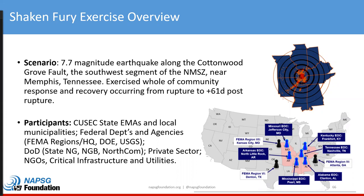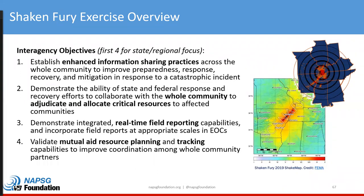Participants in the exercise included emergency management agencies in the CUSEC member states, as well as local municipalities, federal departments and agencies, Department of Defense components, private sector, NGOs, and various utilities. There were nine interagency objectives overall; I'm just showing the first four, which were the ones the CUSEC states were focused on: information sharing, adjudication of critical resources, field reporting, and mutual aid planning and tracking. The community lifeline construct was really a component of each of these objectives, in particular the information sharing objectives.